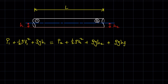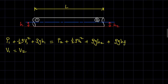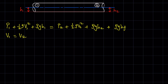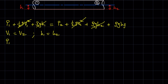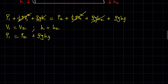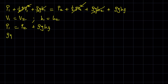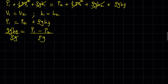Because the diameter of the pipe is constant, v1 equals v2, and h1 equals h2. This means the velocity terms cancel each other and the potential energy terms cancel each other. We are left with p1 equals p2 plus ρghf. Transposing p2, we get ρghf equals p1 minus p2, and dividing both sides by ρg gives us hf.